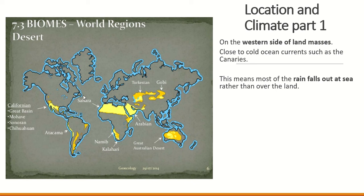Generally they're on the western side of land masses. Why is this? They're close to cold ocean currents. Cold ocean currents — looking at the Pacific Ocean and the Atlantic Ocean — are generally to the west of land masses. A cold ocean current controls the temperature around it. Cold ocean currents will bring cold air, and cold air cannot hold much moisture. So when these cold ocean currents cause the air to be cold, this air reaches land not carrying any moisture. Therefore it will not bring rainfall on land — if it does rain, it will rain out at sea.